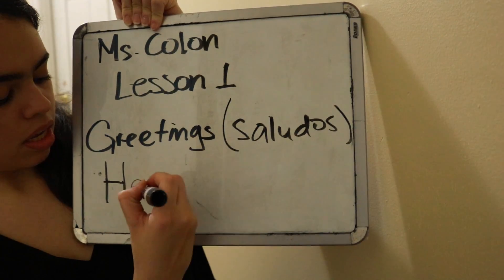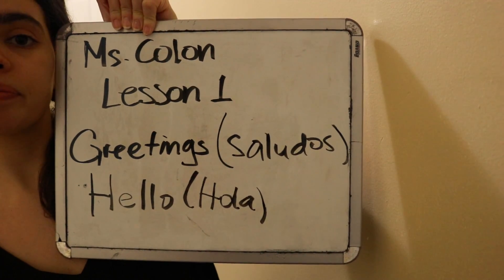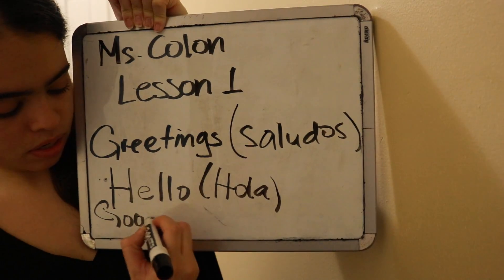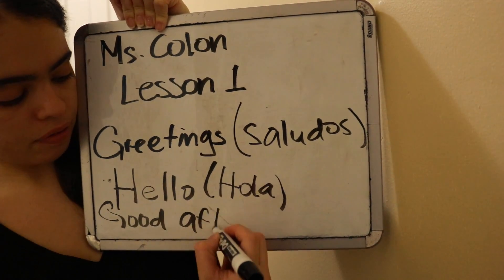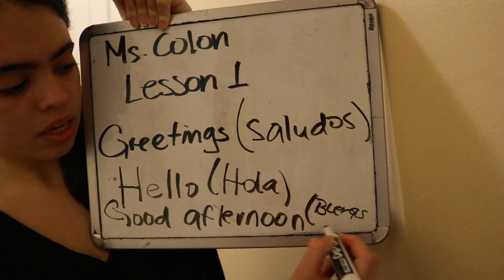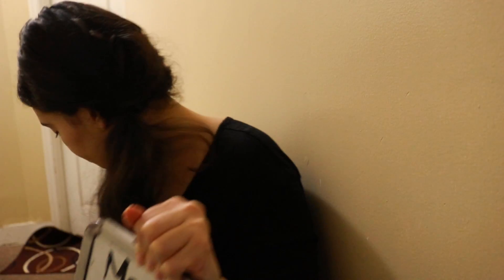This is how you spell it: hello. Next one is good afternoon. Good afternoon — and in Spanish this is Buenas tardes. The next greeting will be good night. Let me write it and you guys will see — I'm spelling good night.